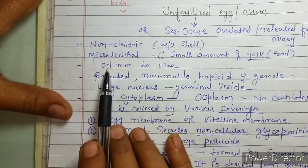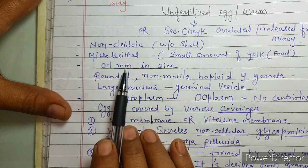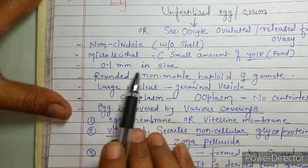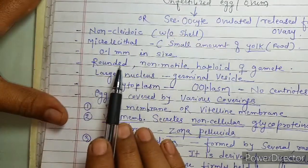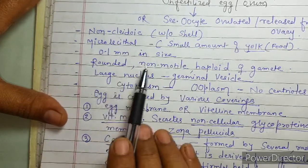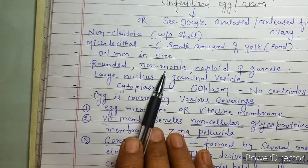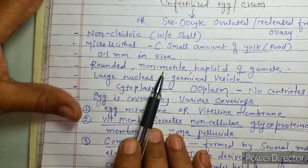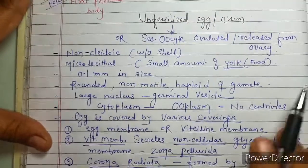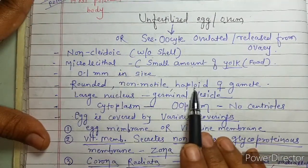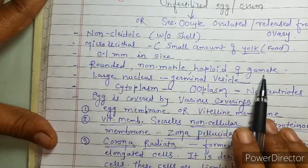It is 0.1 mm in size, rounded in shape, and non-motile. The ovum or egg is a haploid female gamete.